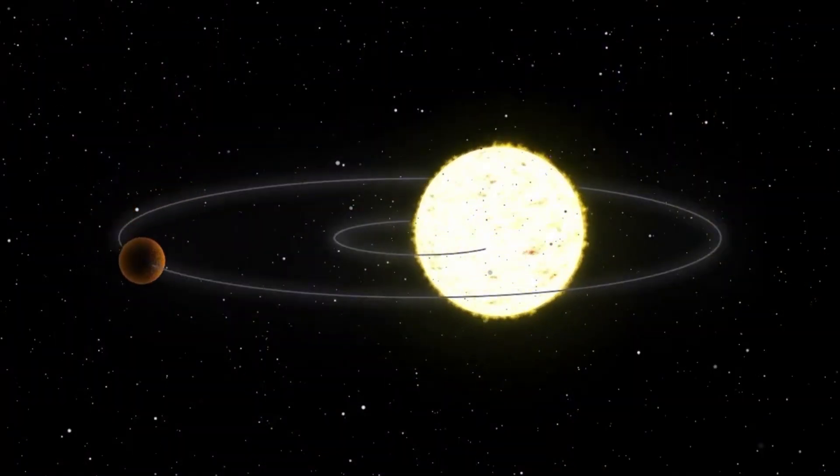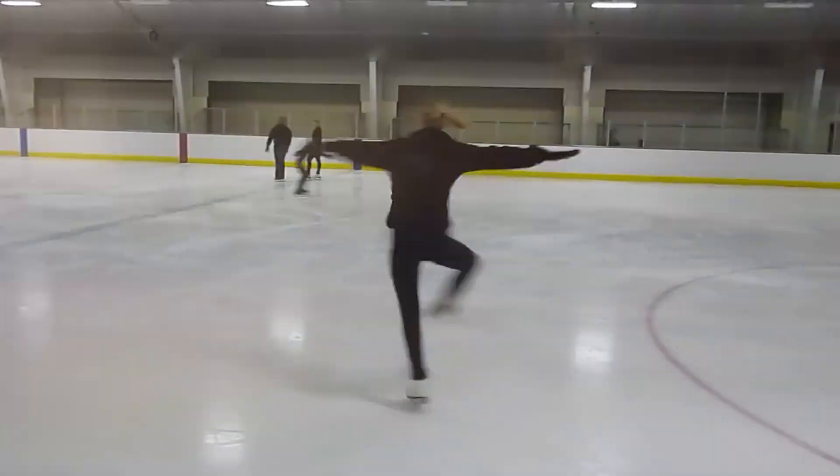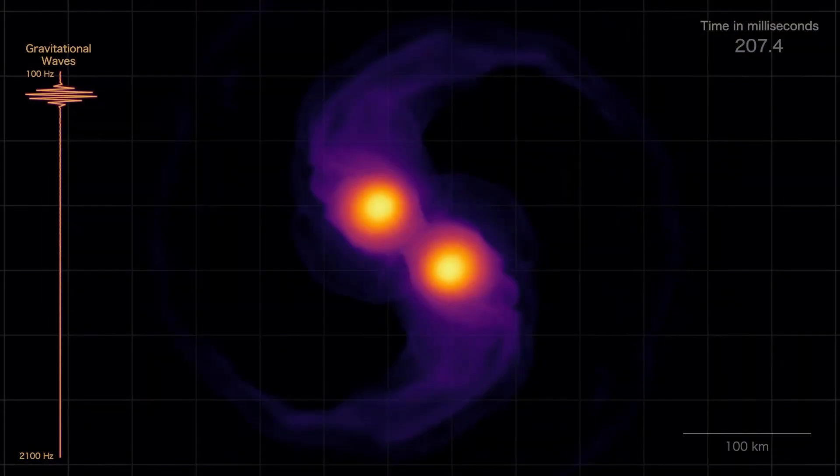The concept of angular momentum plays a vital role in this cosmic dance. Imagine a figure skater spinning with their arms extended. As they pull their arms in, they spin faster. Similarly, as the gas cloud contracts, its rotation speed increases.